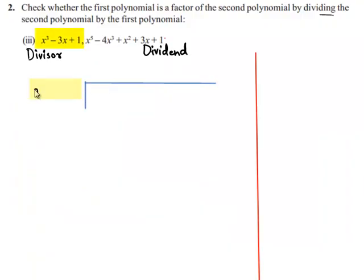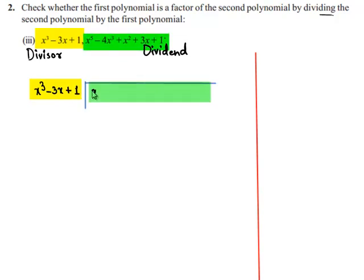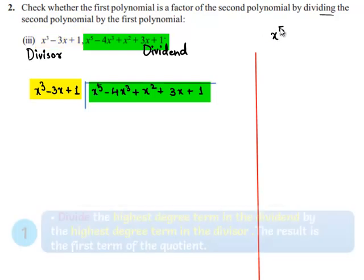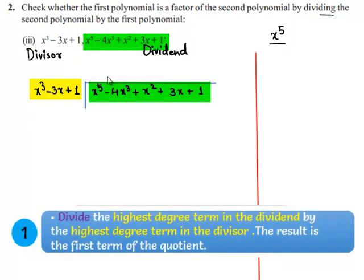We write the divisor here, which is x³ - 3x + 1, and the dividend here, which is x⁵ - 4x³ + x² + 3x + 1. The highest degree term of the dividend is x⁵ and the highest degree term of the divisor is x³.